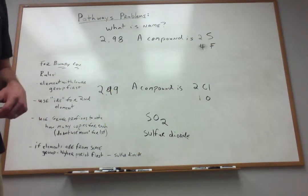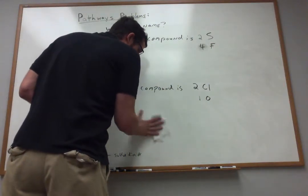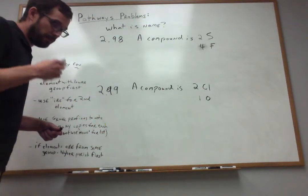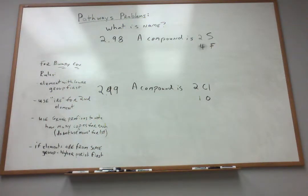All right, so let's try our hand at these problems now using what we now know. So 2.98, you're told that we're going to make a compound from sulfur and fluorine. Two atoms of sulfur, four atoms of fluorine are going to be in this compound. And I look at this and I say, sulfur and fluorine, these are nonmetals. This is going to be a binary covalent compound. Because of that, I've got to follow these rules. So what's the next thing that I've got to figure out then?